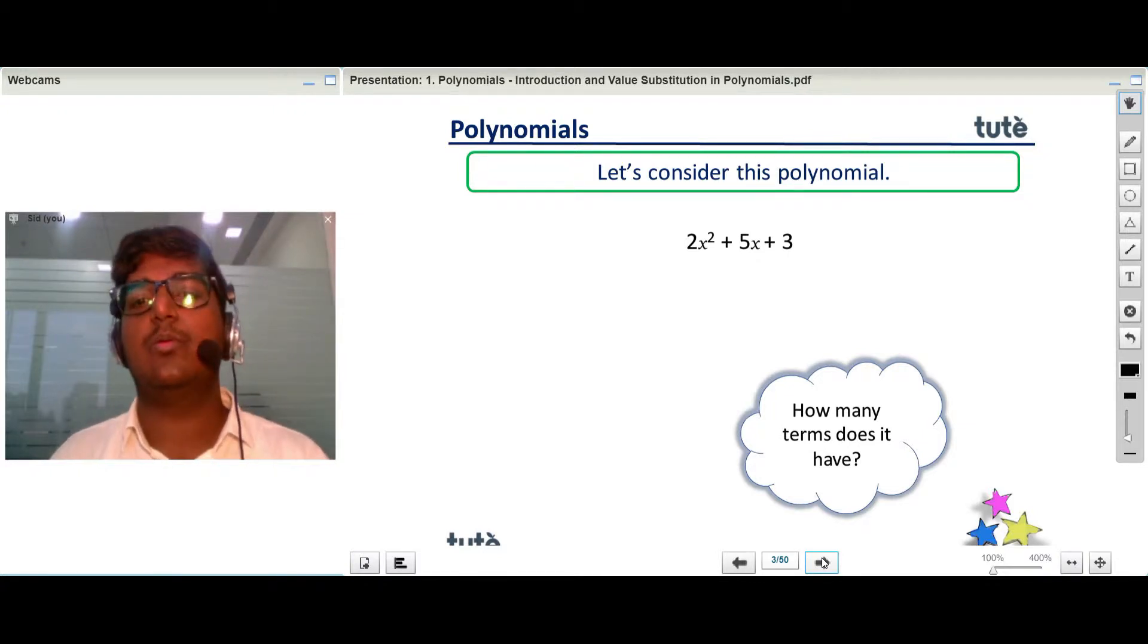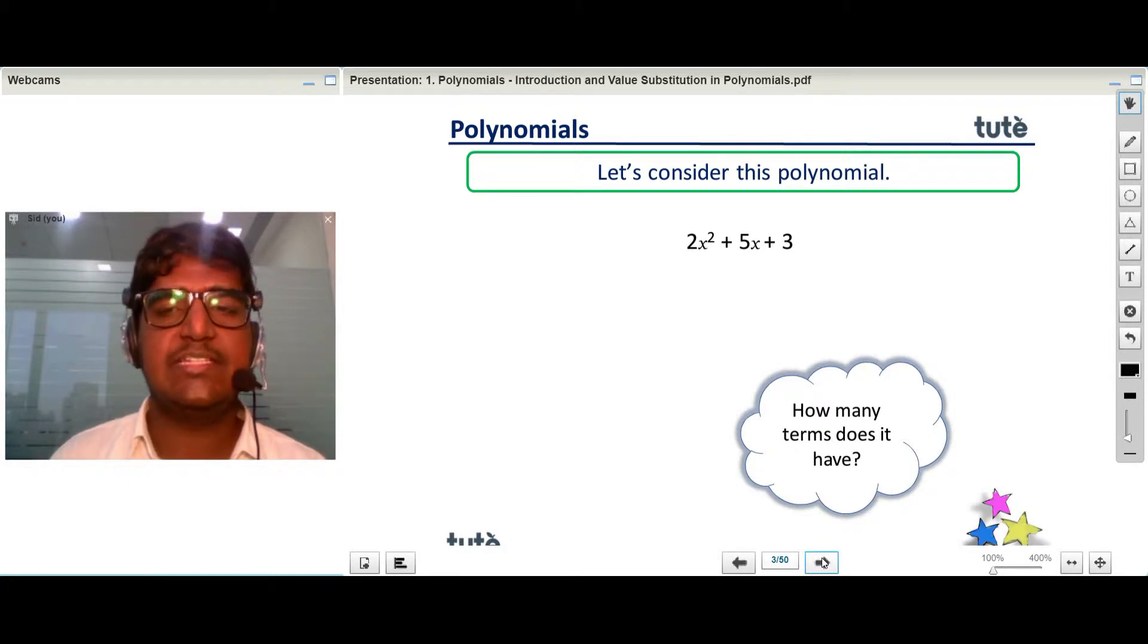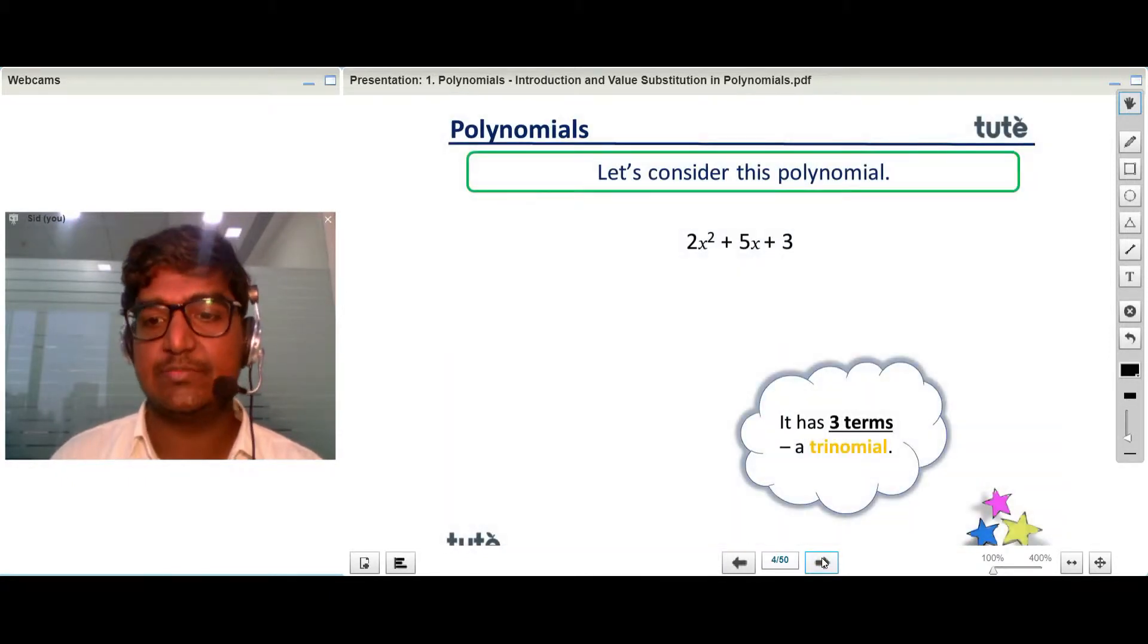Now let's consider this polynomial: 2x² + 5x + 3. How many terms does it have? As you can see, there are three terms. Therefore, we call this a trinomial.